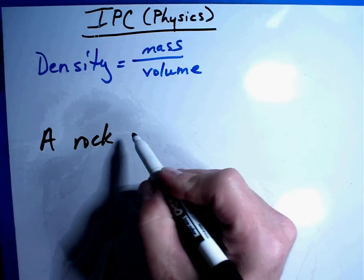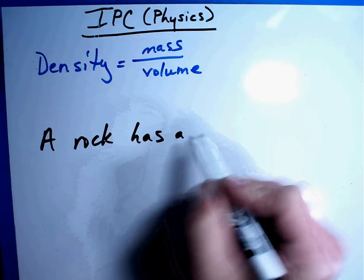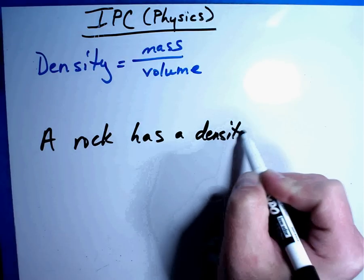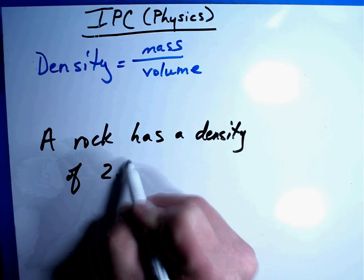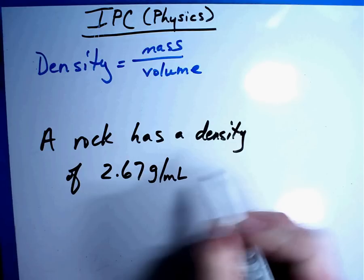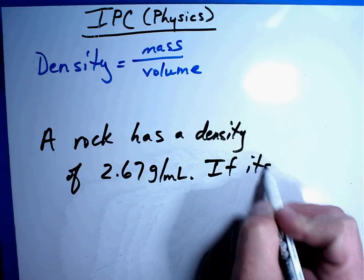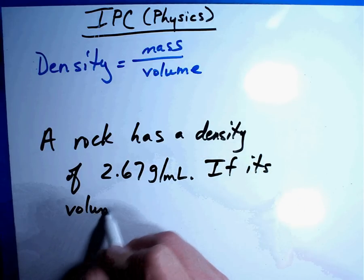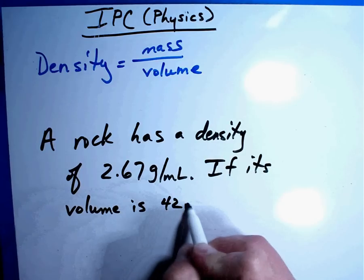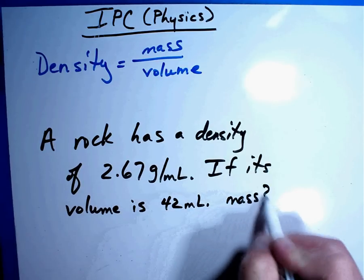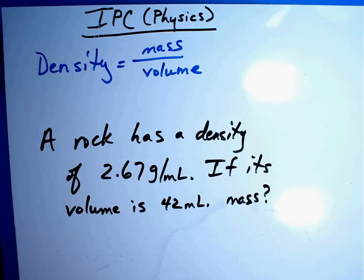I'm just going to use a rock just to make it simple. A rock has a density of 2.67 grams per milliliter. If its volume is 42 milliliters, what's its mass? I'll give you a second to pause, get this information, and we'll work this one. Alright, here's what we're going to do. First, we start with the formula, D equals M divided by V.